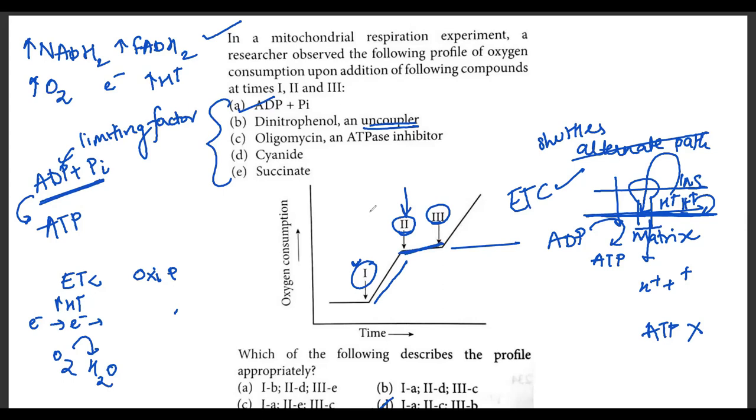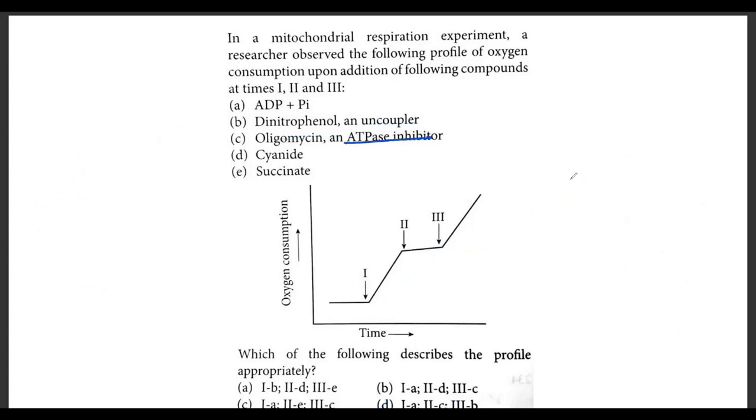For the second compound, we can observe that there is stagnancy. The oxygen consumption is remaining stagnant, neither increasing nor decreasing. Why is this so? The answer here, because it's T, shows us that it is oligomycin. What is oligomycin? Oligomycin is an ATPase inhibitor. The matrix is here, H plus ions are present over here. If they want to come through, they have to come through ATP synthase. This ATP synthase has two components, F0 and F1.